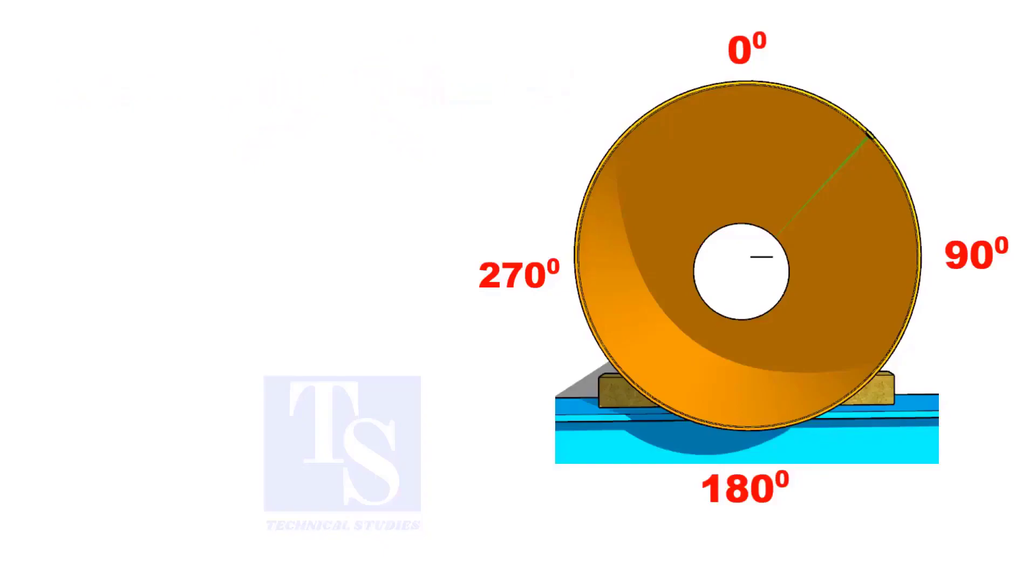Instead, use the progressive method. In progressive method, hold the 0 mm on the center line and mark 500 mm on the pipe. Then, 0 to 1000, and 0 to 1500 mm.